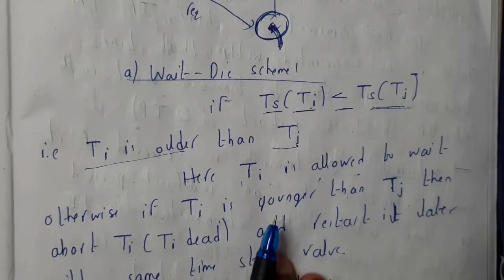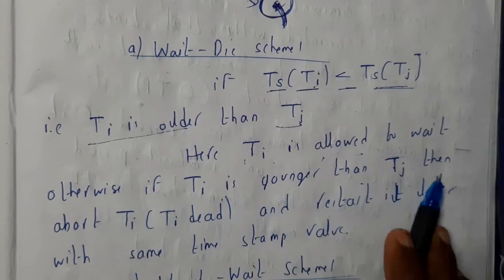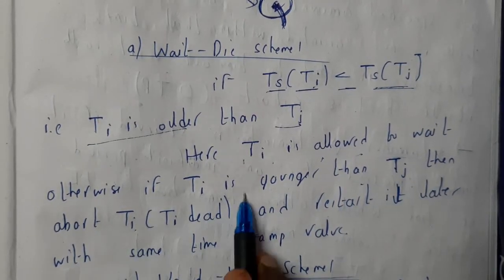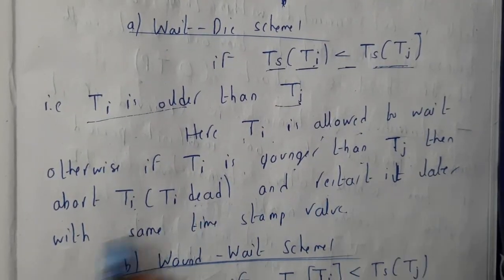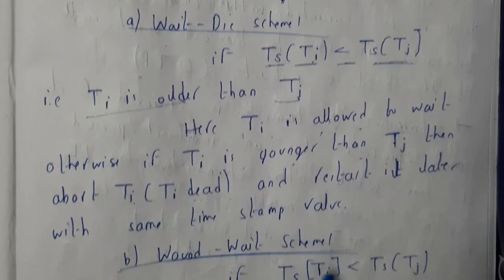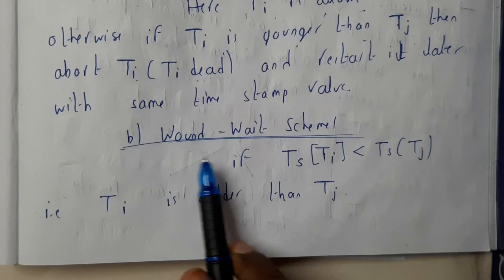Otherwise, if Ti is younger than Tj, we will abort it. If Ti is the new process, we will be aborting it and restarting it later when the timestamp restarts.